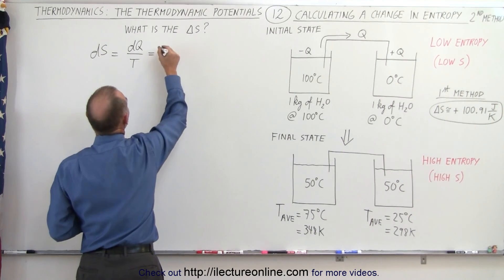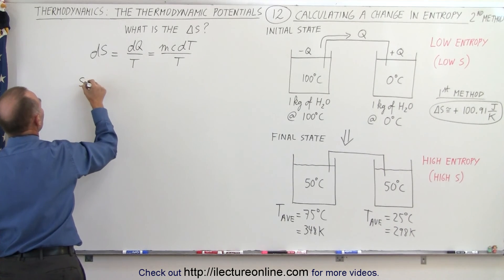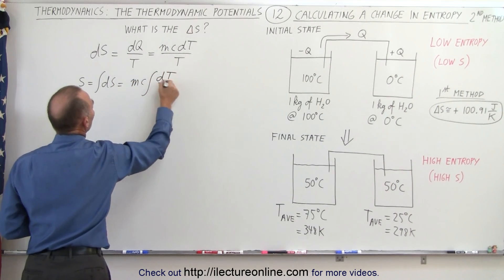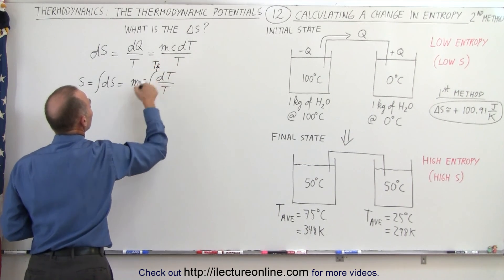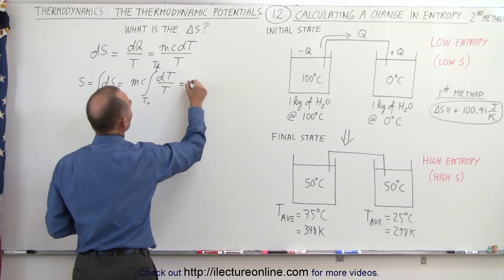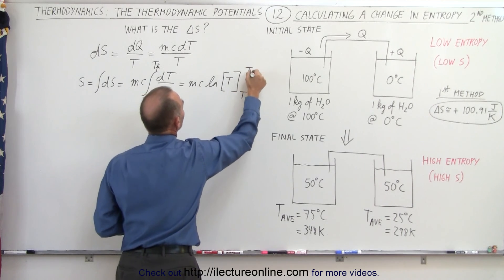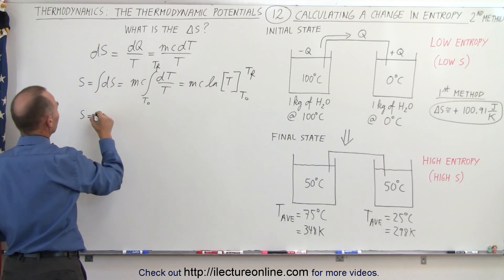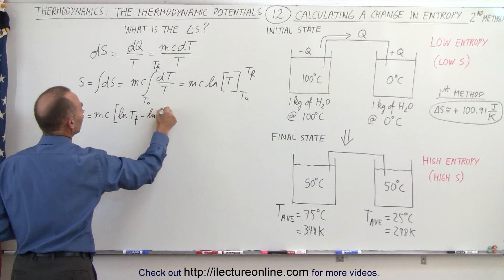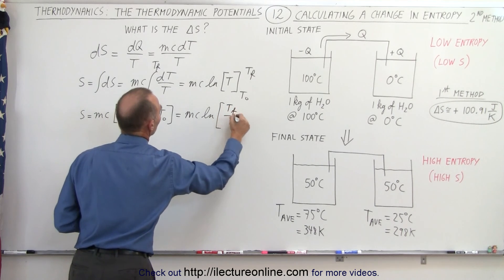Since dq can be defined as mc·dT, we can see that the change in entropy s is equal to the integral of ds, which equals mc times the integral from the initial temperature to the final temperature. Since m and c are constants we can take them outside the integral sign. This equals mc times the natural log of T evaluated from T_initial to T_final, which means the entropy change equals mc times the natural log of T_final minus the natural log of T_initial, or mc times the natural log of the ratio T_final over T_initial.